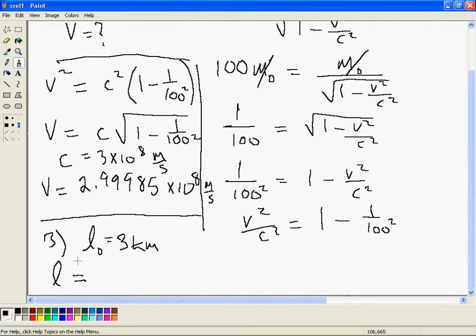how long does the electron... if the electron, let's say, was a sentient being, how long would the electron observe the nuclear accelerator to be if a person standing in the nuclear accelerator in the same reference frame said it was 3 kilometers?